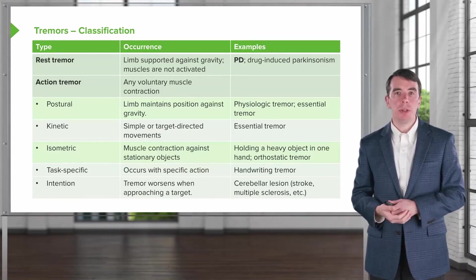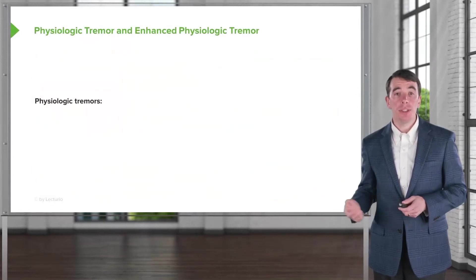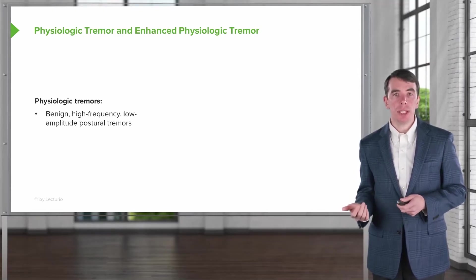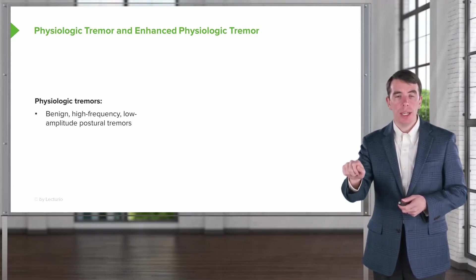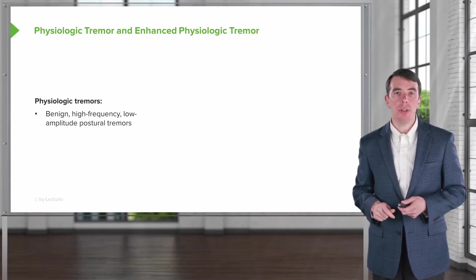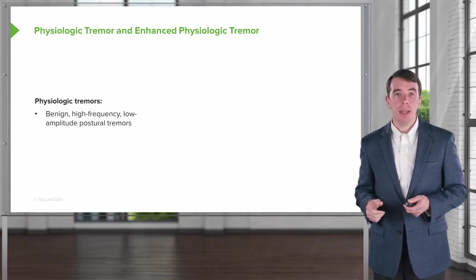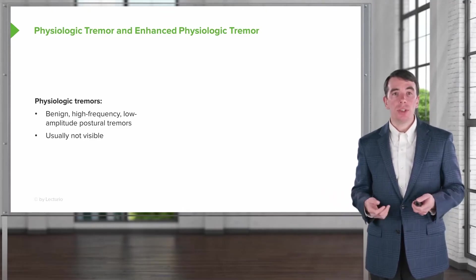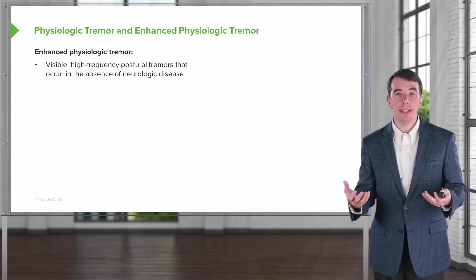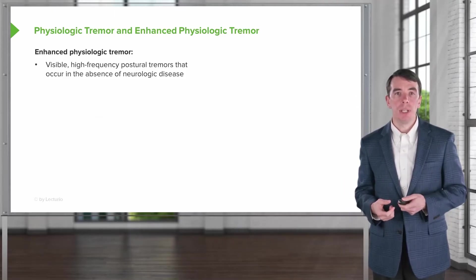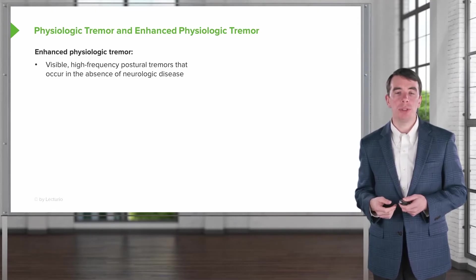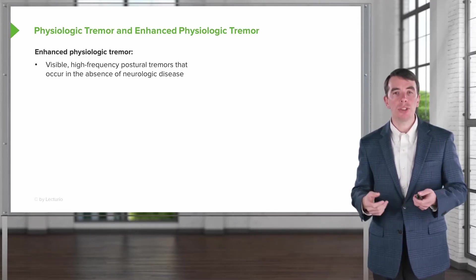Let's talk about some common tremors and syndromes. First, physiologic tremor — we all have one; it's just part of being human. It is benign, high frequency, and low amplitude, so it's quick and often cannot be seen well due to its low amplitude. It's usually not visible, but in certain settings we see an enhanced physiologic tremor: a visible, high-frequency postural tremor occurring in the absence of neurologic disease.